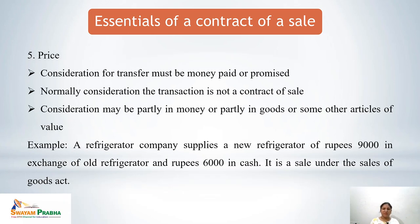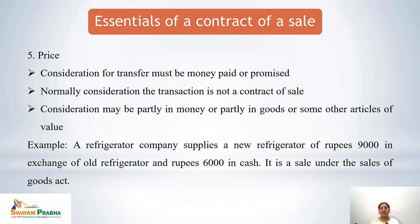The fifth essential is price. Price is the money consideration for the transfer of goods. Without consideration, there is no contract of sale. The consideration may be partly in money and partly in some other article of value. For example, a refrigerator company supplying a new refrigerator of Rs. 9,000 in exchange for an old refrigerator plus Rs. 6,000 in cash — the consideration includes both the old refrigerator and cash — constitutes a valid sale under the Sales of Goods Act.